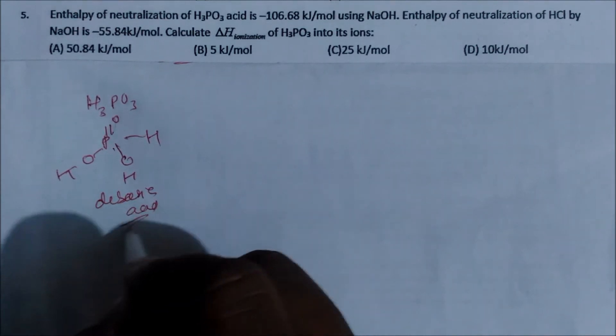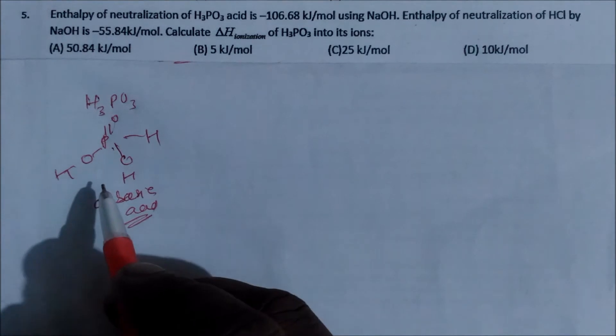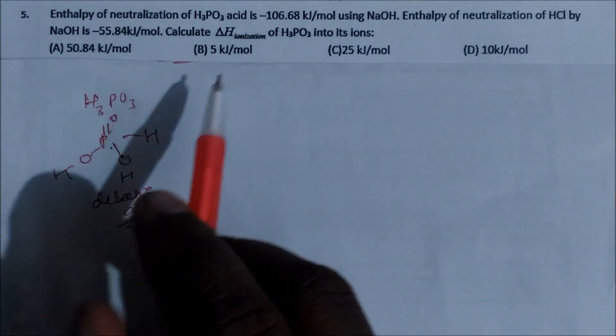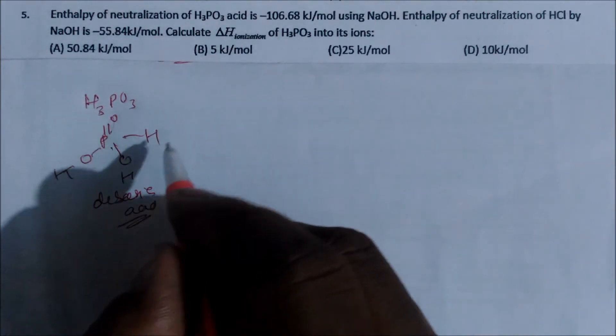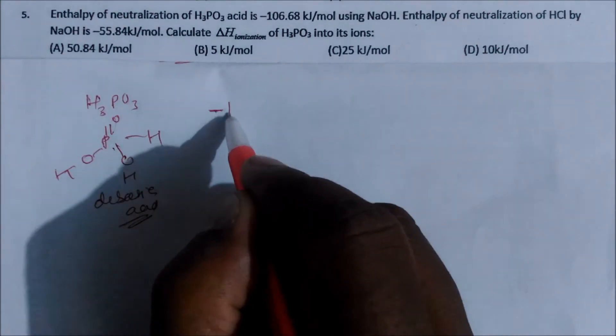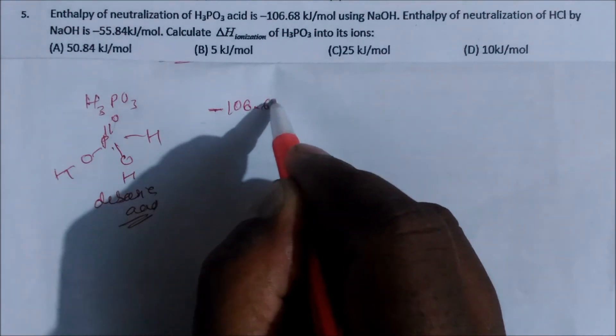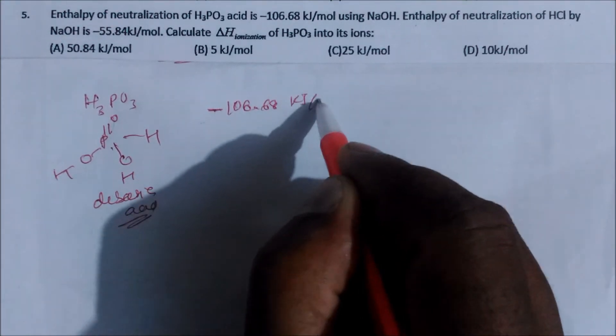Since it is a dibasic acid, this can give only two hydrogen plus. So this is the total amount of energy for two hydrogen, which is nothing but minus 106.68 kJ. It is a dibasic acid per mole.